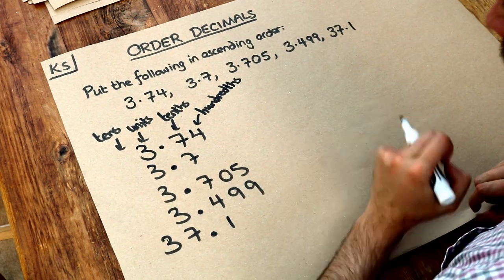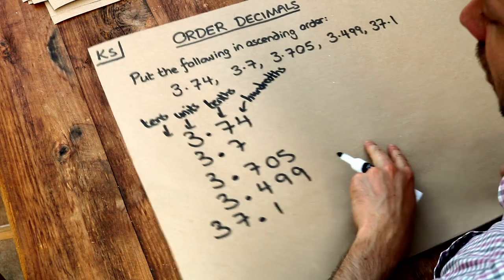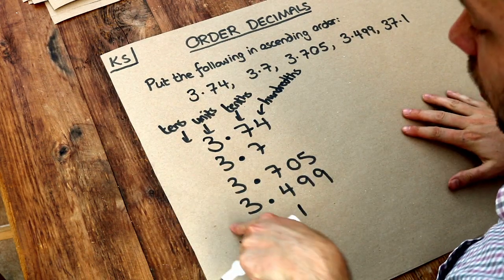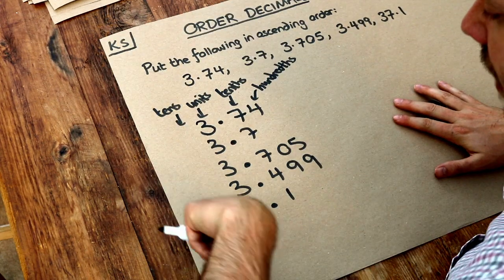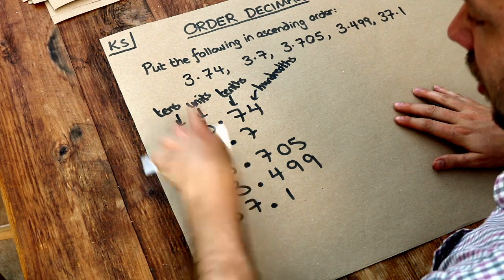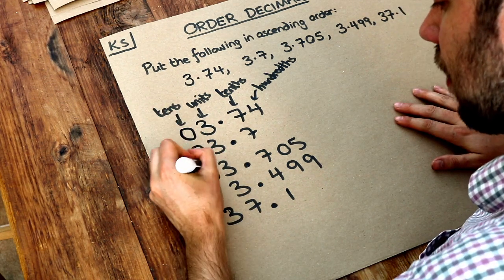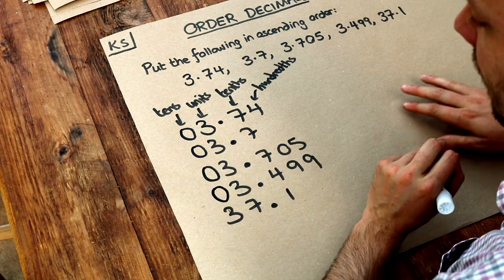Now as we saw in the video on ordering whole numbers, we always look at the place value of the highest worth first. So we're going to look at the tens digit. Now effectively there's no digit here so they're effectively zeros, so let's put a zero there for the tens digit because we don't have any tens.